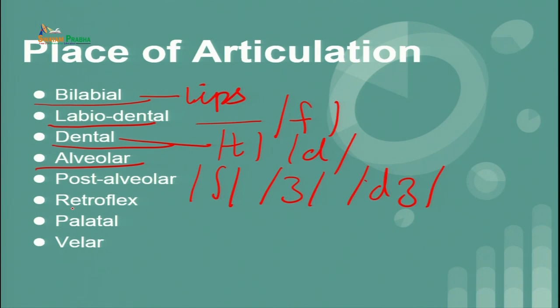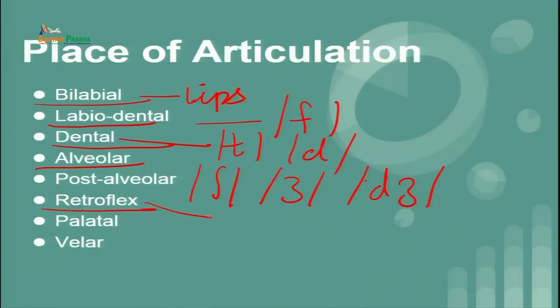Now let us understand retroflex sounds — it is very interesting. Retroflex involves the tip of the tongue in such a way that while pronouncing, it starts rolling. You produce 'r' by bringing your tongue forward and rolling it. In English, the retroflex 'r' sound is an example we can take here.